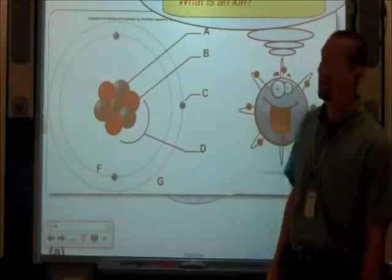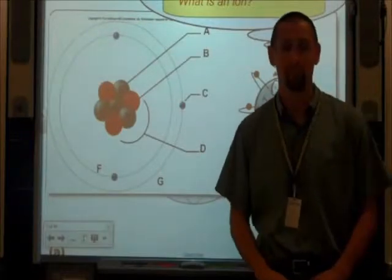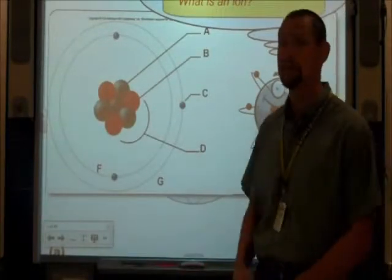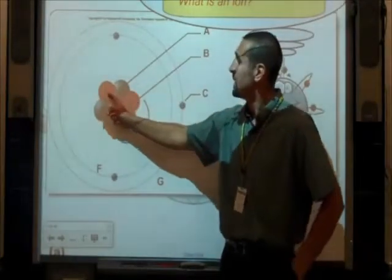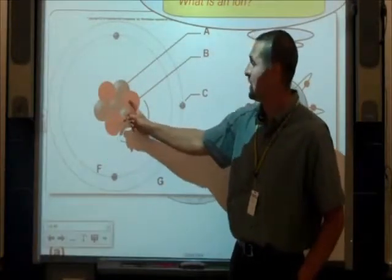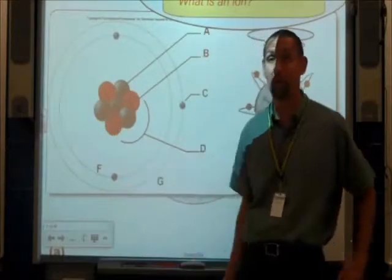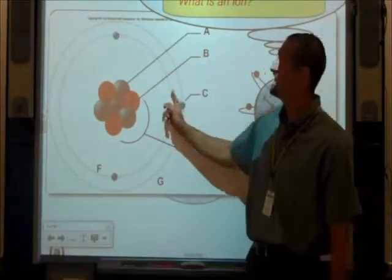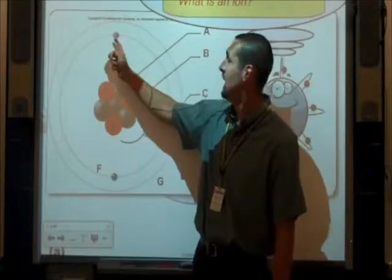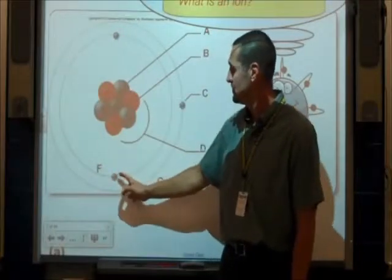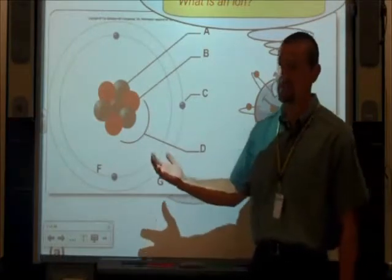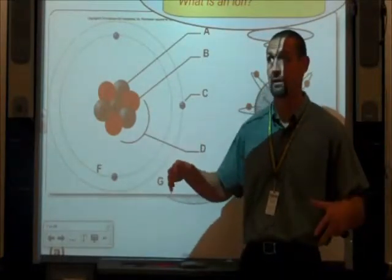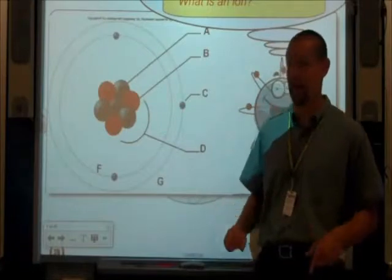So what makes it an ion? And why are most atoms neutral? Why is it that most atoms don't even have a charge? Well, notice closely the protons in the nucleus. One, two, three positive charges. Notice the negatively charged electrons surrounding the nucleus. One, two, three negative charges. So three positives, three negatives together make a neutral atom.